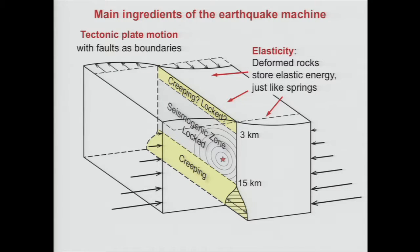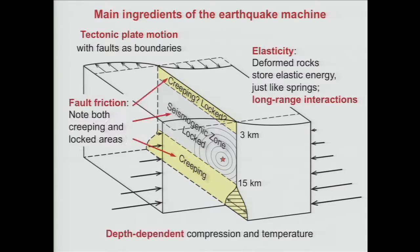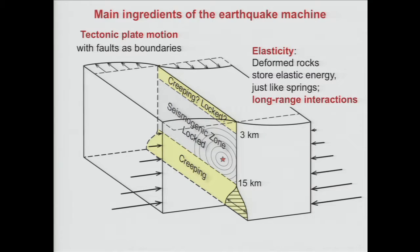The next ingredient is the elasticity of the rocks around this fault. They store energy just like a spring would. If you compress a spring, it stores energy and then releases it. The same happens with these rocks — they get deformed, as shown here by this curved line. The elasticity also provides long-range interactions, so that if one point here moves, it's as if everything is connected by a bunch of invisible springs. If one point moves, everybody else around kind of feels that motion — first through waves and then in a static sense.